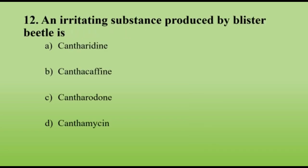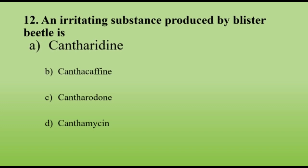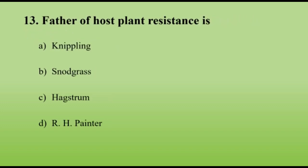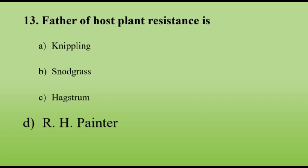An irritating substance produced by blister beetles is cantharidin. The father of host plant resistance is R.H. Painter.